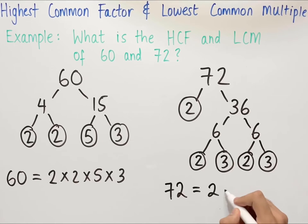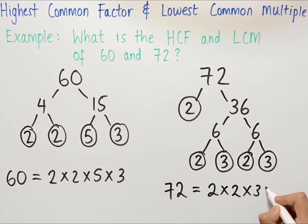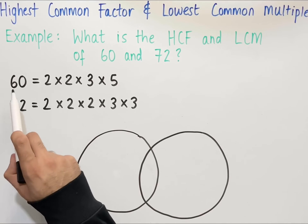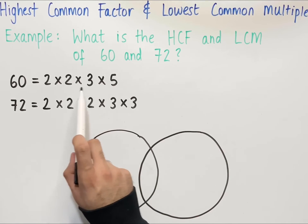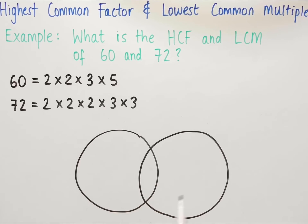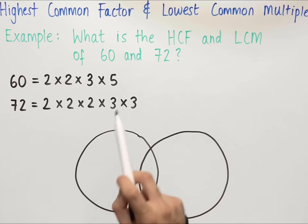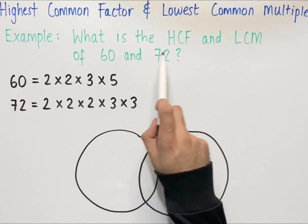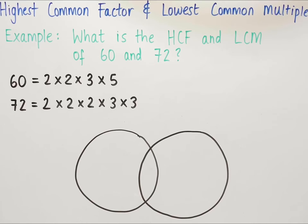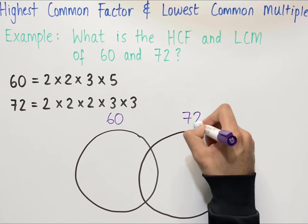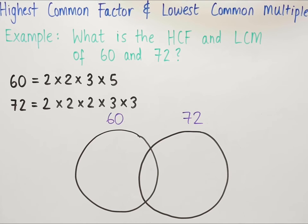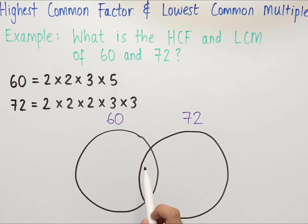So 72 equals 2 times 2 times 3 times 2 times 3. We now have 60 and 72 written as the product of their prime factors in order from smallest to biggest. We use a Venn diagram to help us work out the highest common factor and lowest common multiple. We label the circles with the two numbers — 60 and 72 — and it doesn't matter which way round.